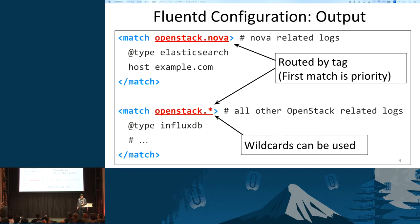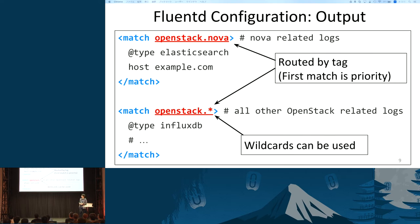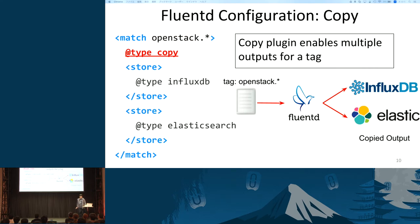Then tagged inputs are matched in the match section. In this case, the input from the previous slide will be matched at the first section because it's tagged as OpenStack.Nova. You can also use wildcards like in the second section. As a whole, Nova-related tags will be routed to Elasticsearch at the first section, and all other OpenStack-related logs will be routed to InfluxDB.